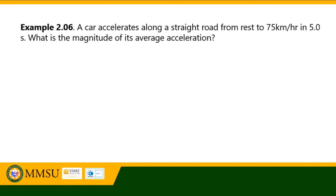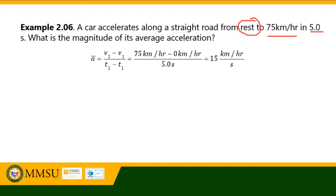In the module, the first word problem is: a car accelerates along a straight road from rest to 75 kilometers per hour in 5 seconds. What is the magnitude of its average acceleration? From the problem, the initial velocity is 0 (rest), the final velocity is 75 kilometers per hour, and the time is 5 seconds. So the acceleration equals 75 km/h minus 0, divided by 5, which is 15 kilometers per hour per second.